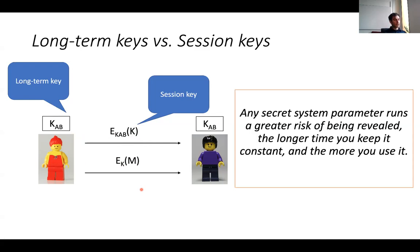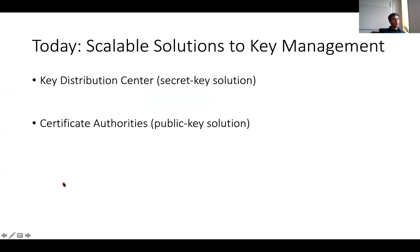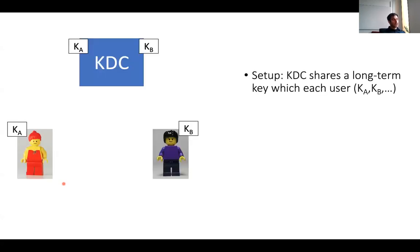Still, even with key rotation, if you have millions of parties instead of just two, you still have the problem of how to get these session keys and long-term keys in place — how do Alice and Bob in the first place get the chance to communicate securely? The main focus of this lecture is two different solutions for scalable key management: the first is a key distribution center, or KDC, based on secret key technology; the second is certificate authorities, or CAs, which use public key solutions.